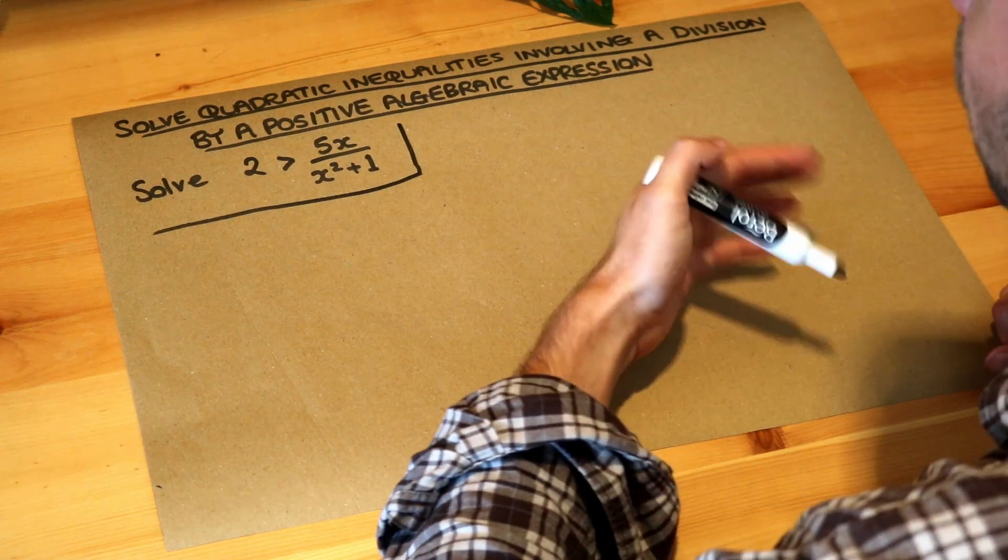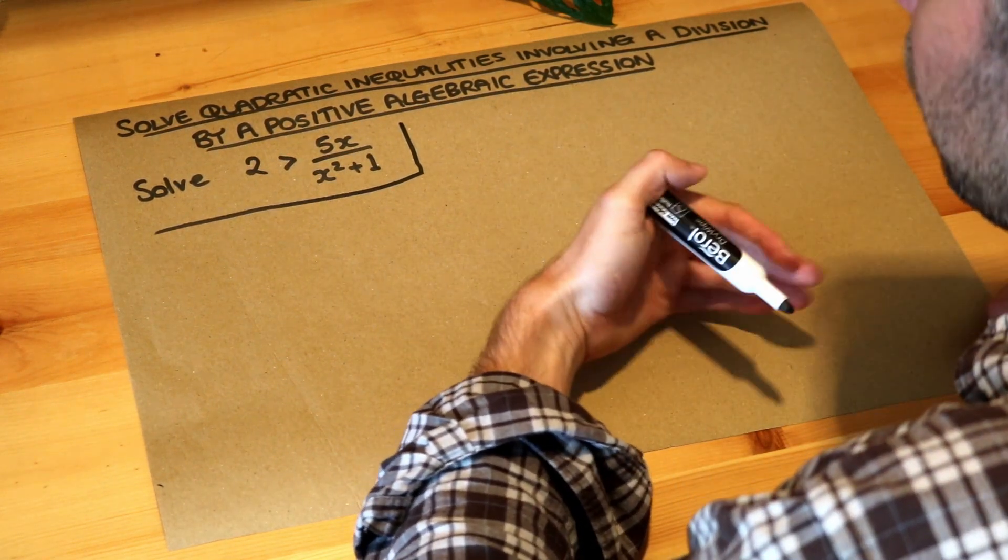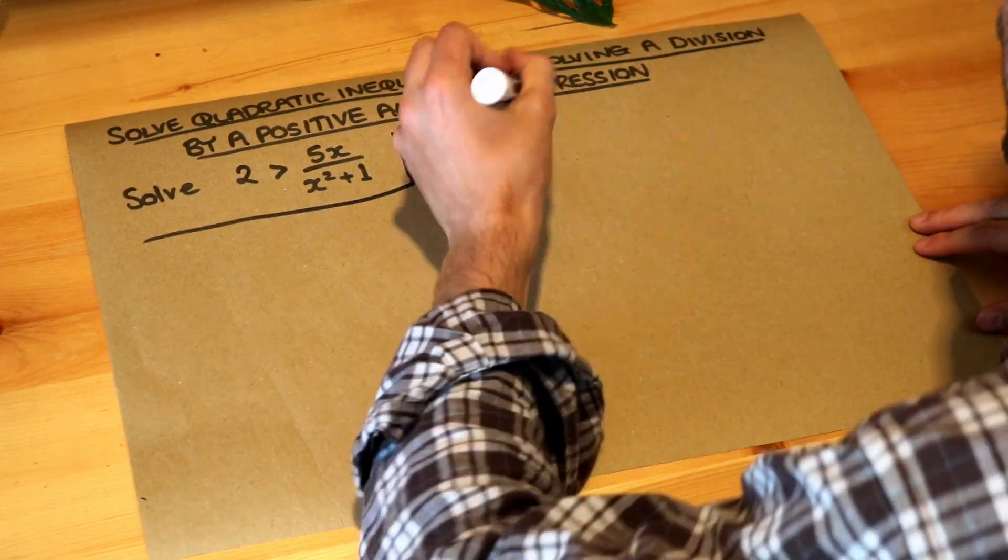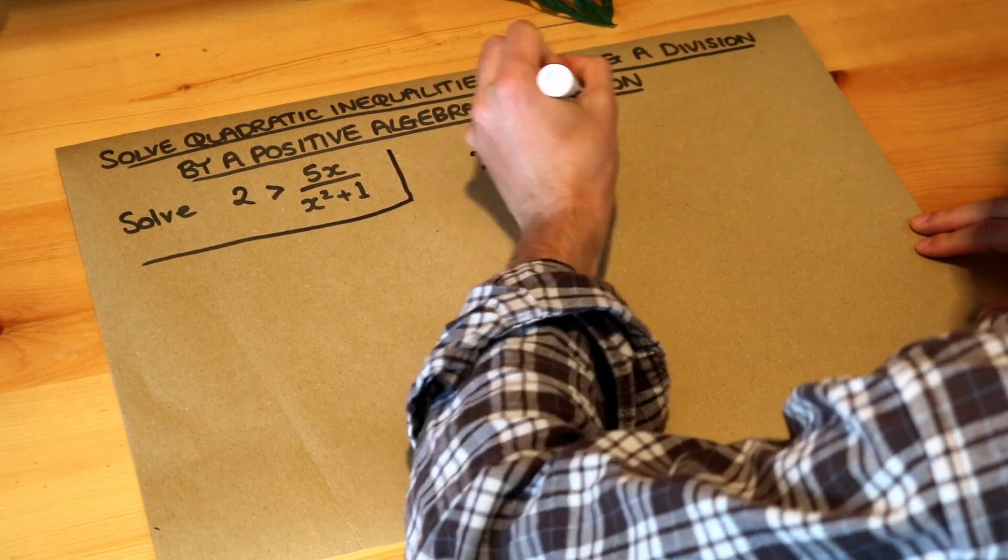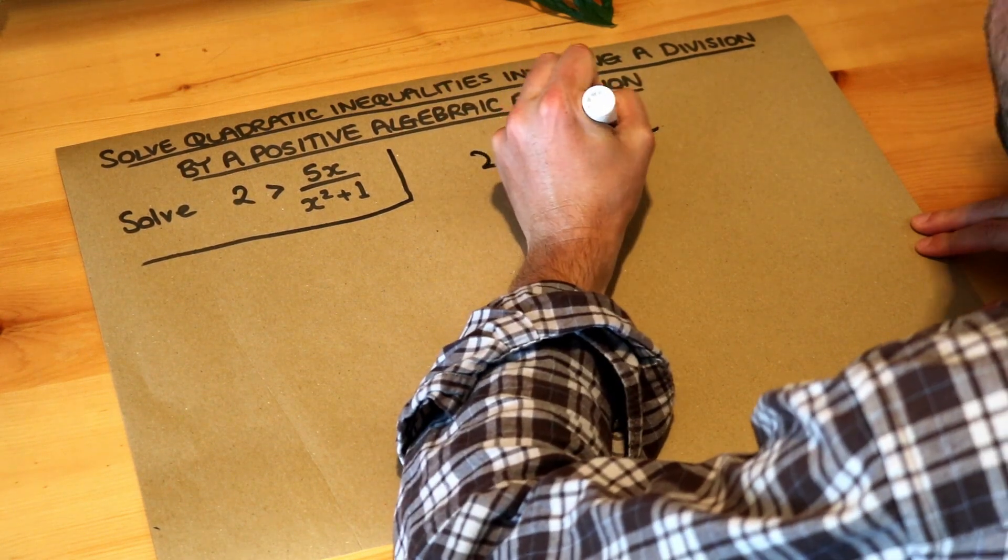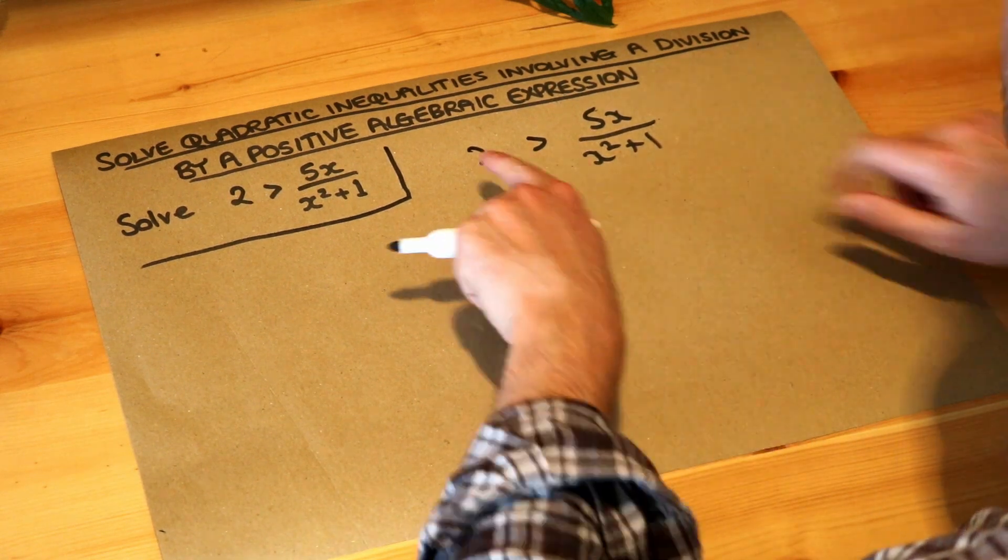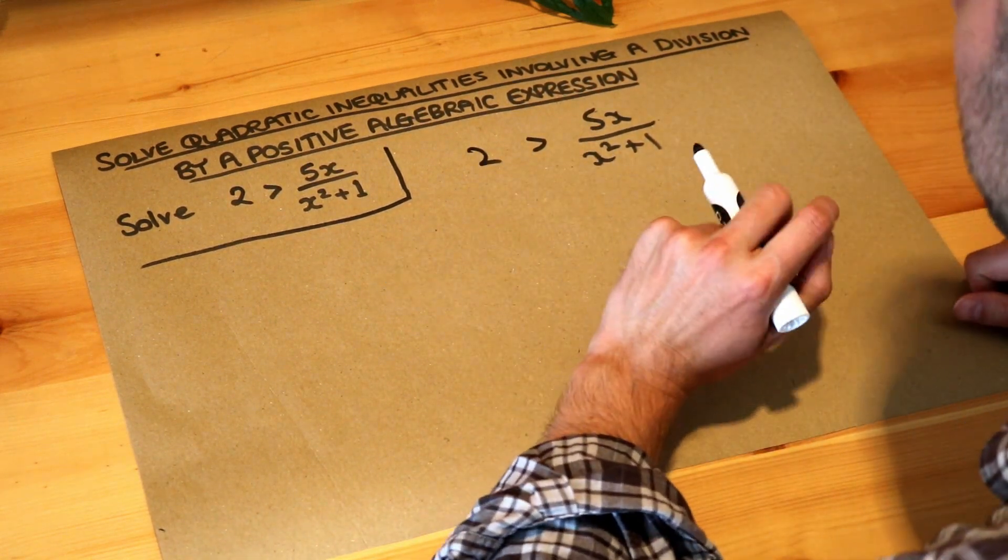Now in general when we have fractions and equations or inequalities, we kind of want to get rid of the fractions to make the equation or inequality simpler. So our instinct usually would be to multiply through by whatever we have here, to multiply both sides of the inequality by x squared plus one.